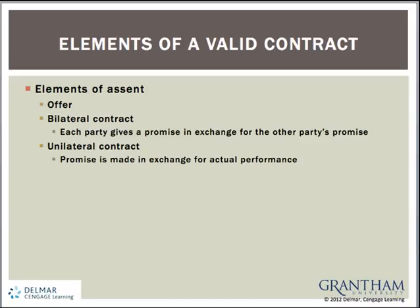The last element that we need to discuss for a valid contract is consideration, which is the benefit received by a party in exchange for the party's promise or performance. This means that if the person promises or does something he or she is not obligated to do in exchange for a promise or performance that he or she is not otherwise entitled to receive, the value of the consideration must be determinable in terms of value, quantity, and quality. Consideration cannot be something that is illegal or would force the party to engage in illegal conduct, and consideration must be something that is genuine as represented.